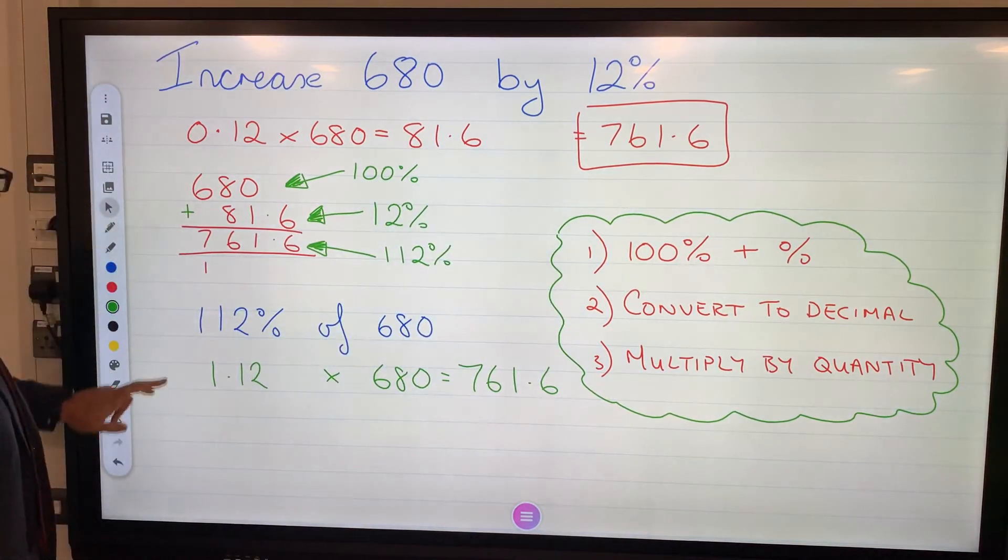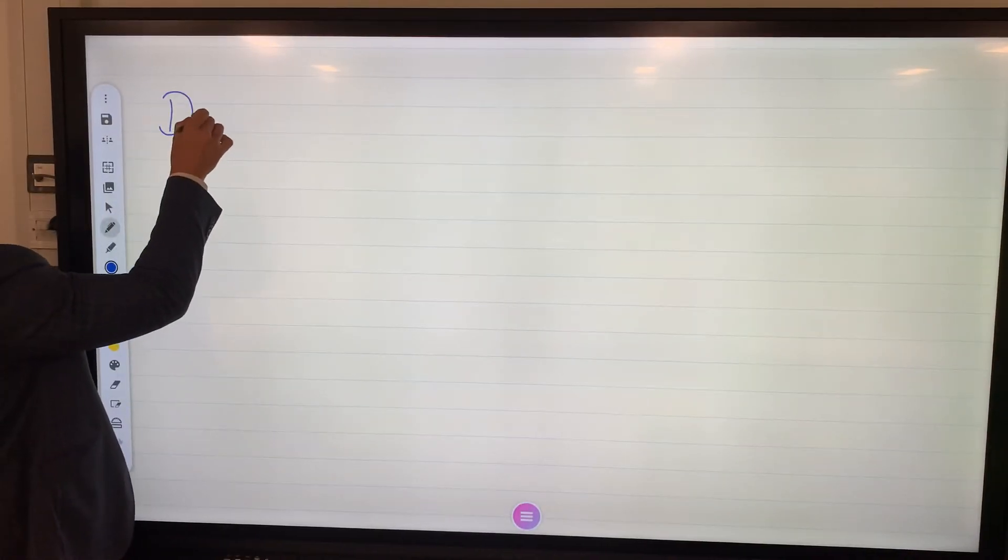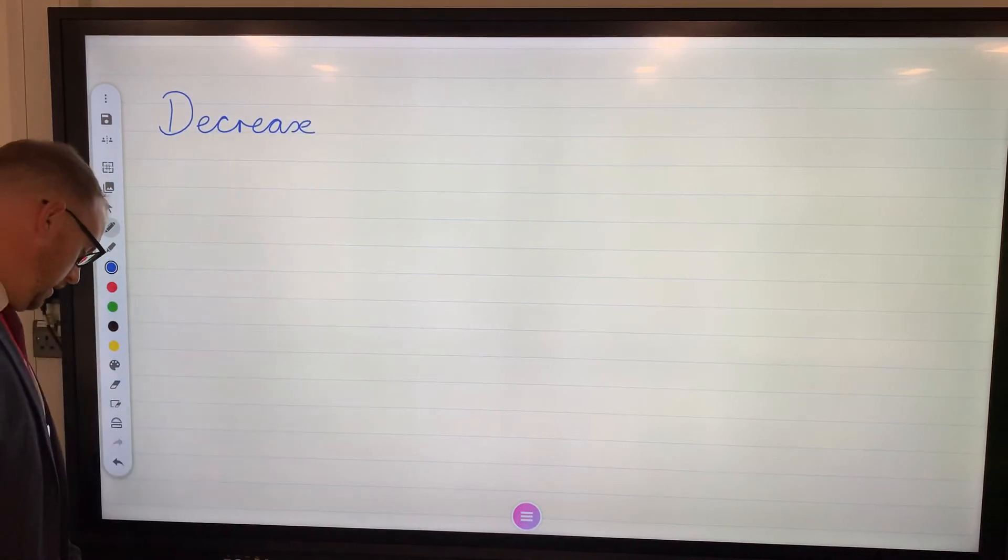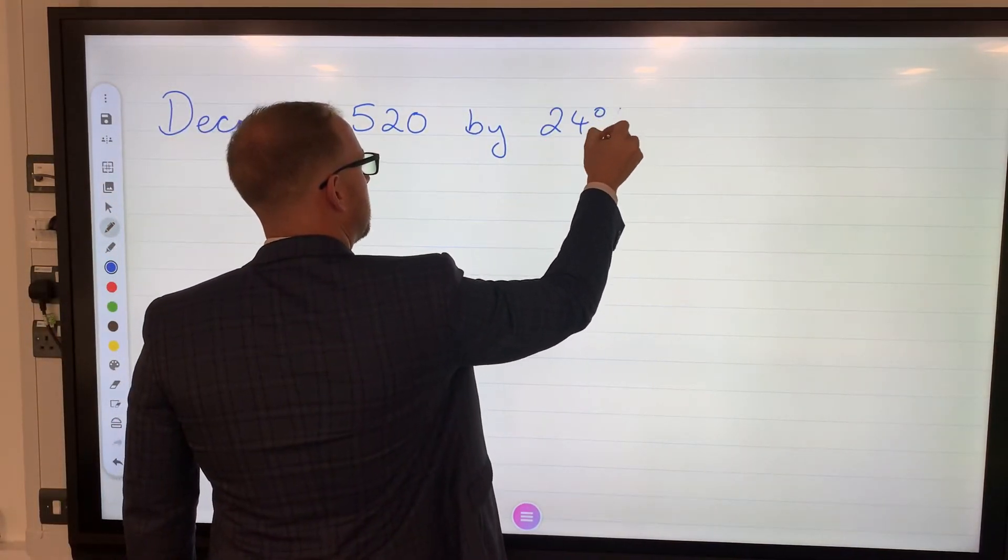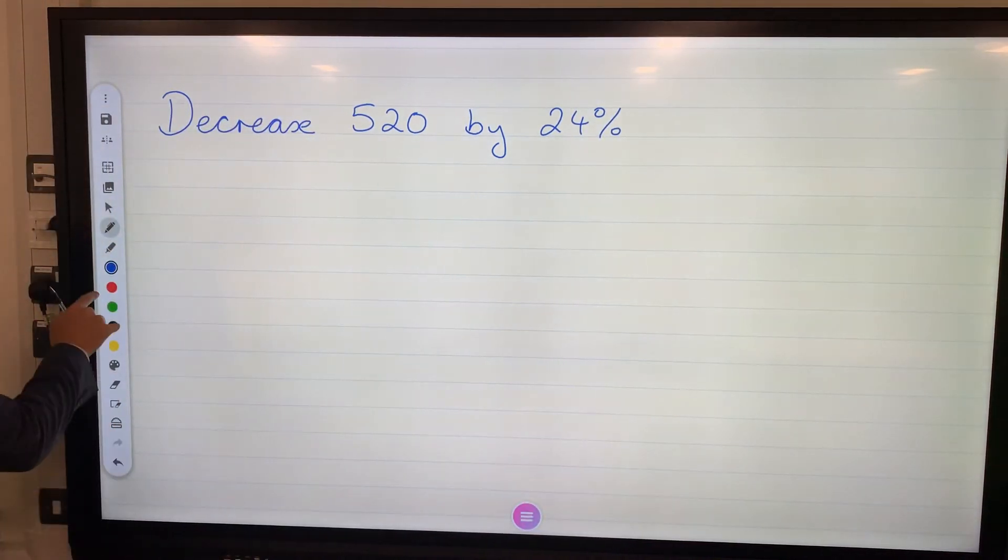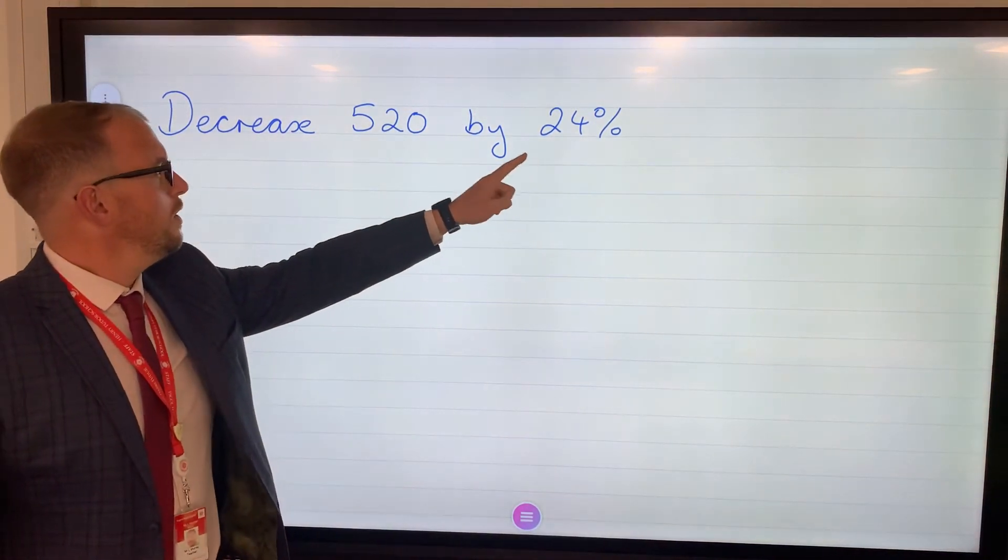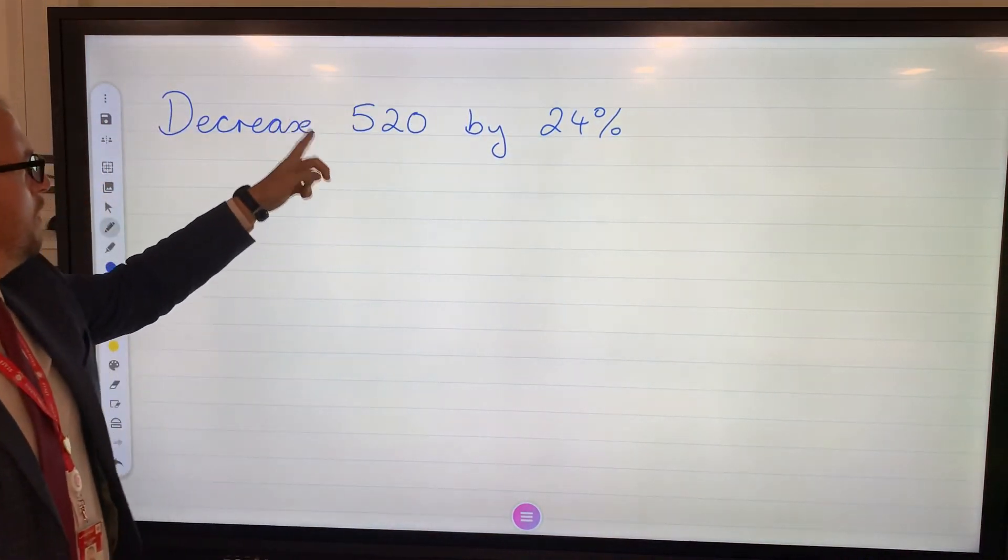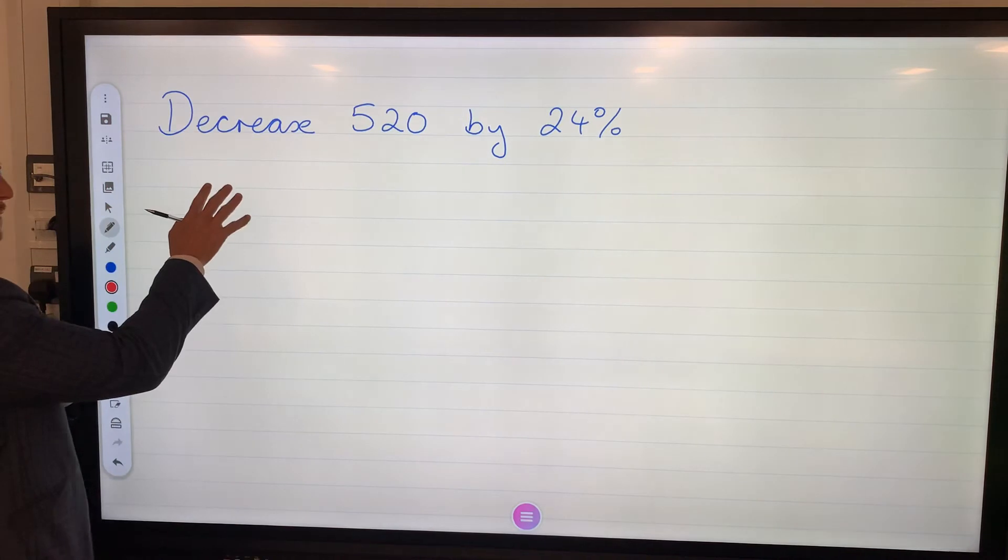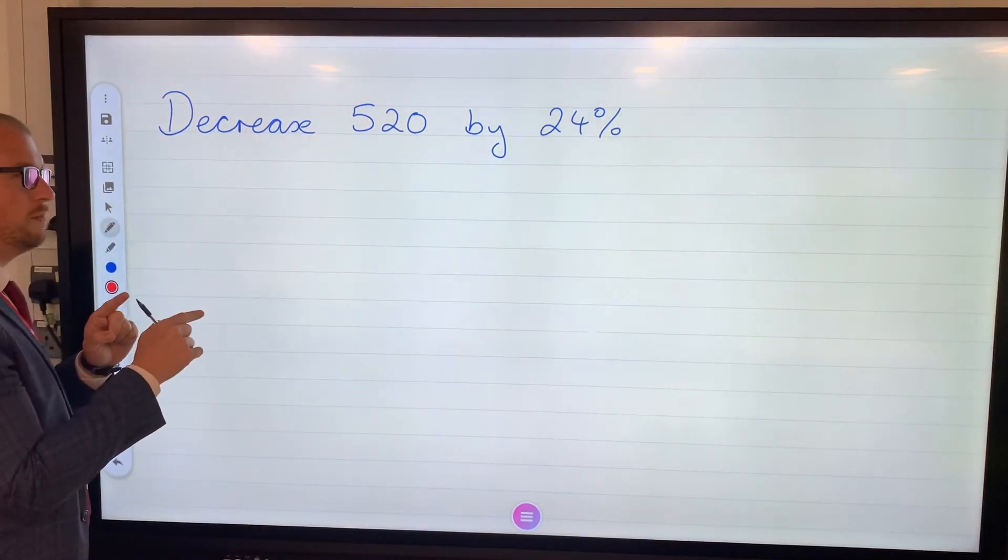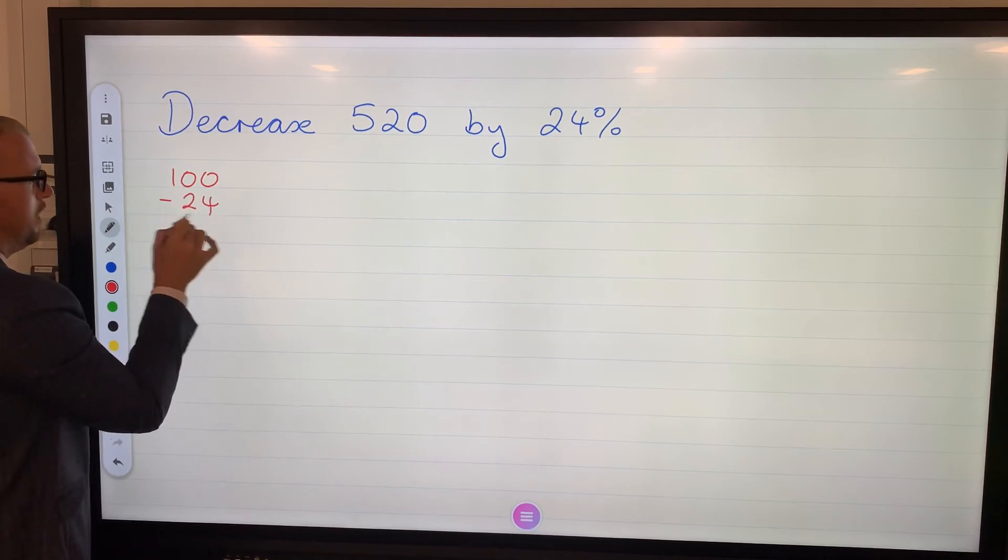Increase is added on, decrease. Let's decrease 520 by 24 percent. Okay so decrease, that means decrease 520 by 24. So if we find 24 and then take it away then we'll have a decrease of 24. So you could find 24 and then take it away. However, increase you have to add it on to 100 percent. This one we're going to subtract because it's decrease. So 100 take away 24 is 76.